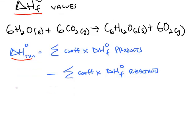So for example, in this equation, the product glucose has a coefficient of 1, so that implies 1 mole of glucose. And we look up the delta H formation for glucose, and that's a negative 1273.3 kilojoules per mole.